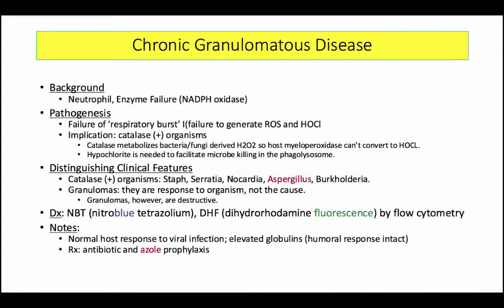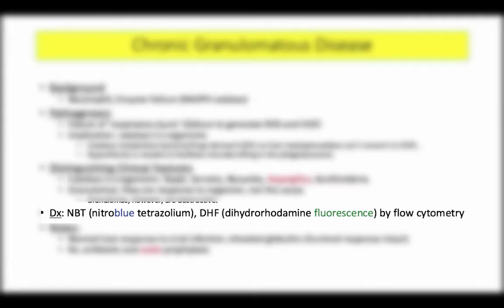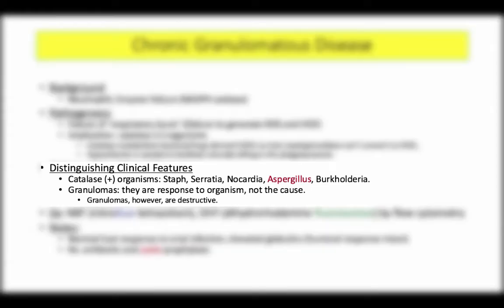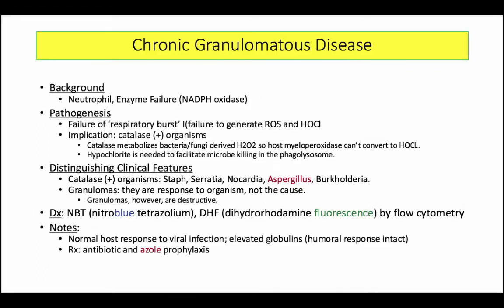I have little to add to the information just presented. Given the association with staph and staphylococcal catalase production, most students are familiar with this disorder. Be sure you understand the two diagnostic tests: nitro-blue tetrazoleum and the dihydrorhodamine fluorescence test — these are often part of the question stem or answer. Rather than memorizing the catalase-producing bugs, work the other way: if a patient has Burkholderia growing from the sputum, they are telling you the patient has chronic granulomatous disease. Be ready for questions on failure of the respiratory burst, reactive oxygen species, or the missing enzyme NADPH oxidase.